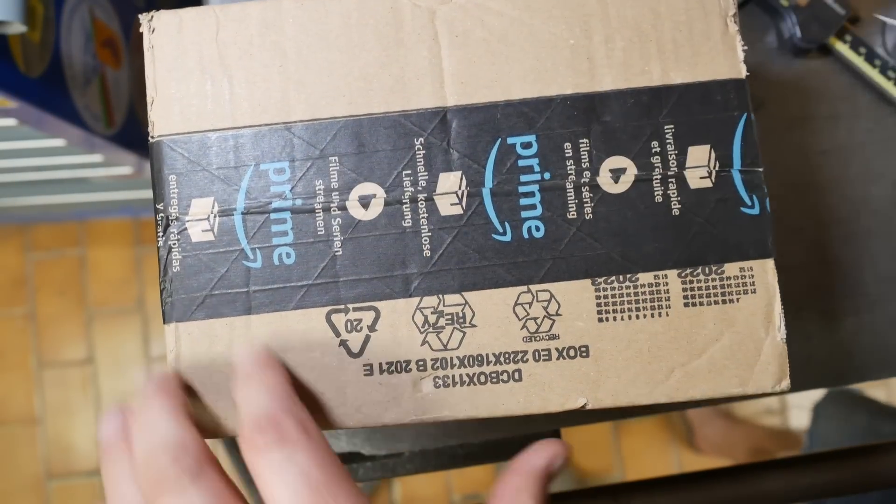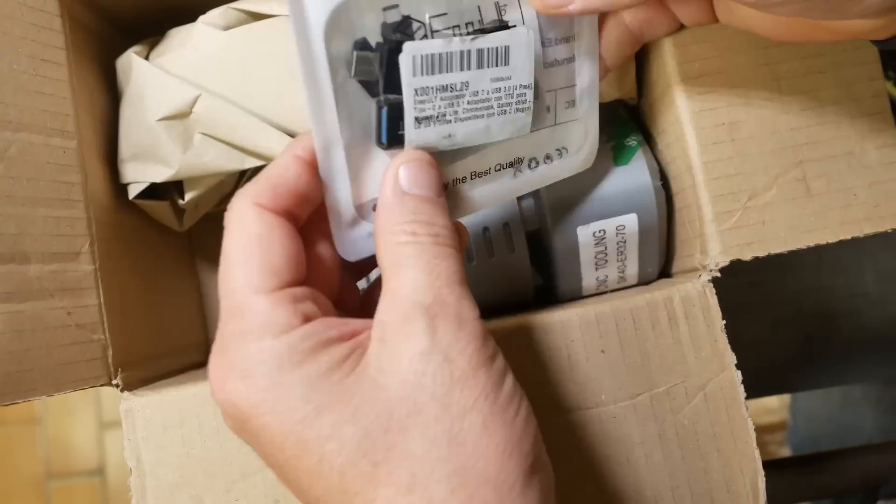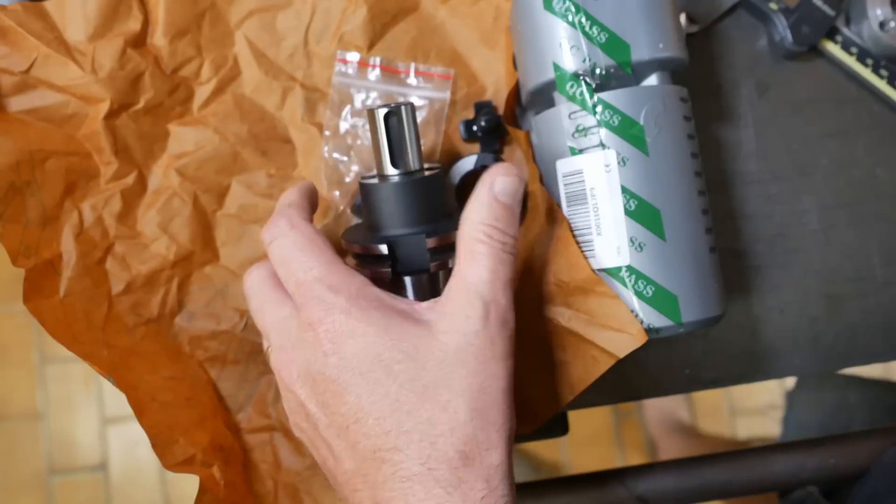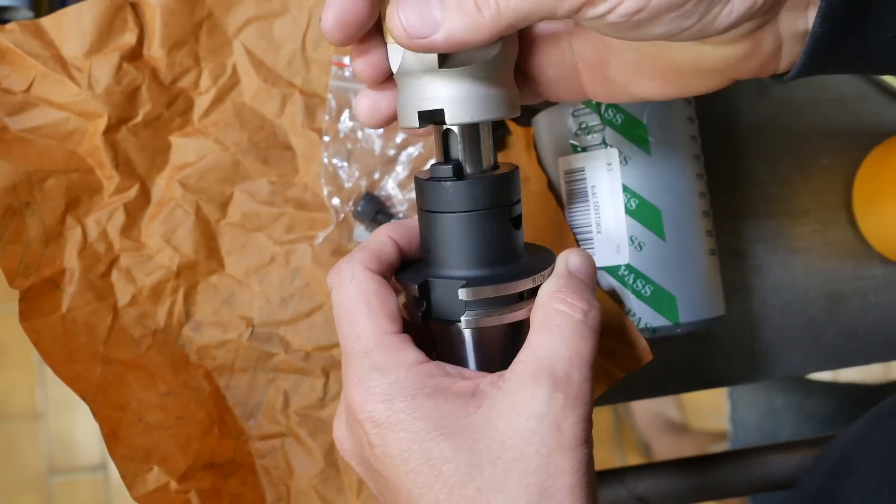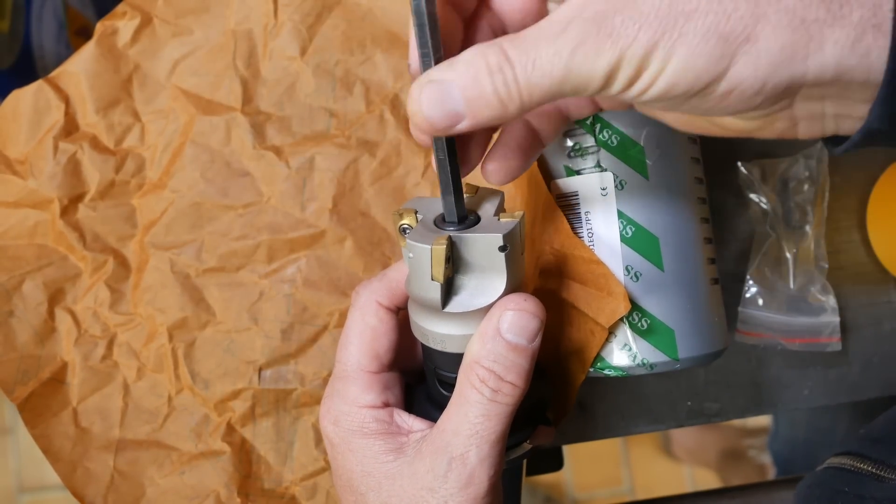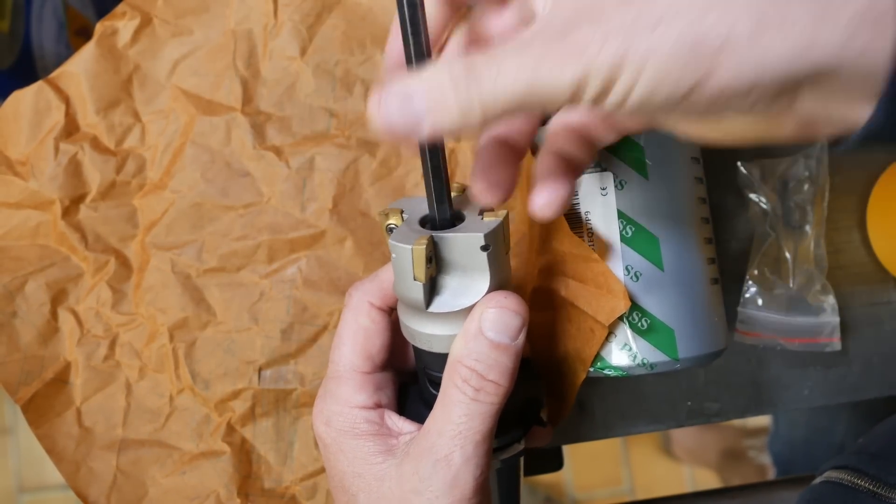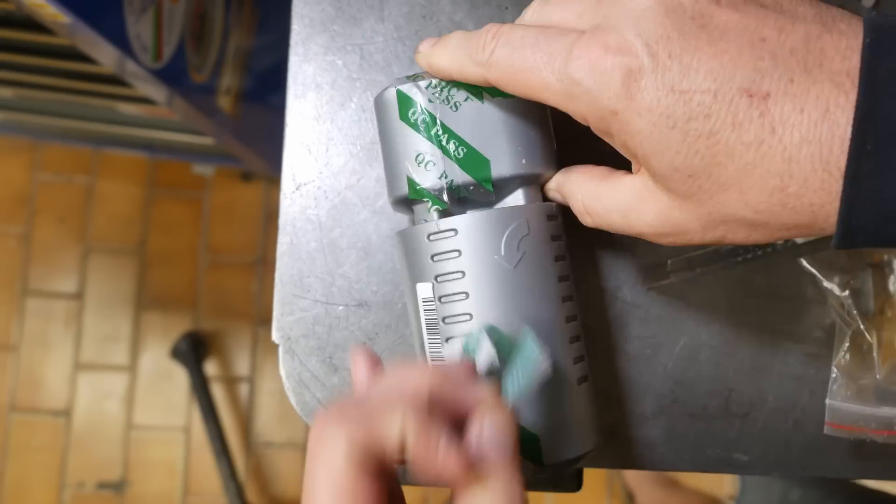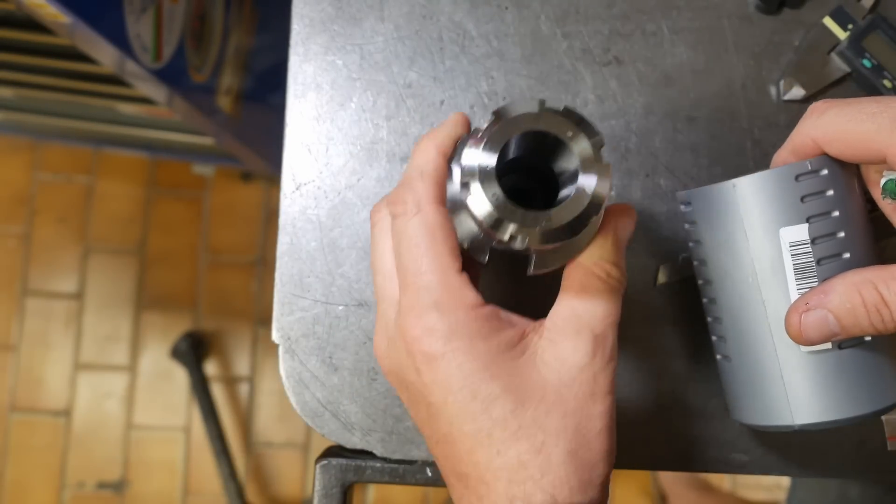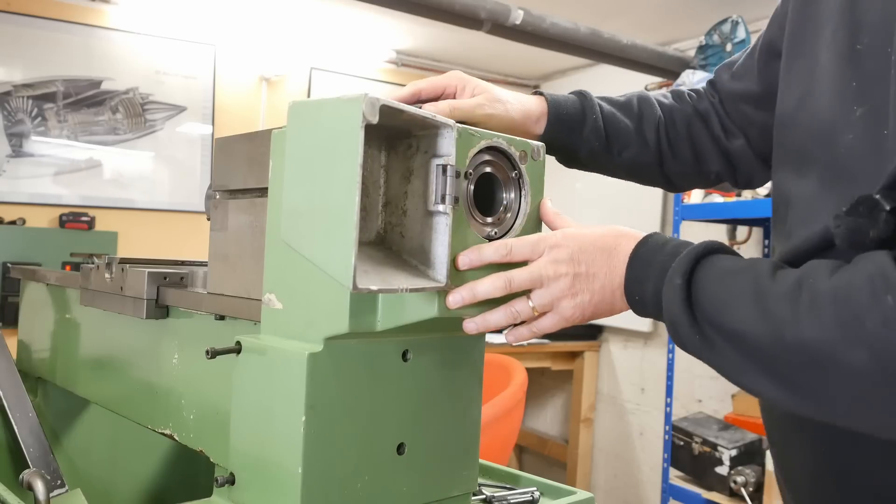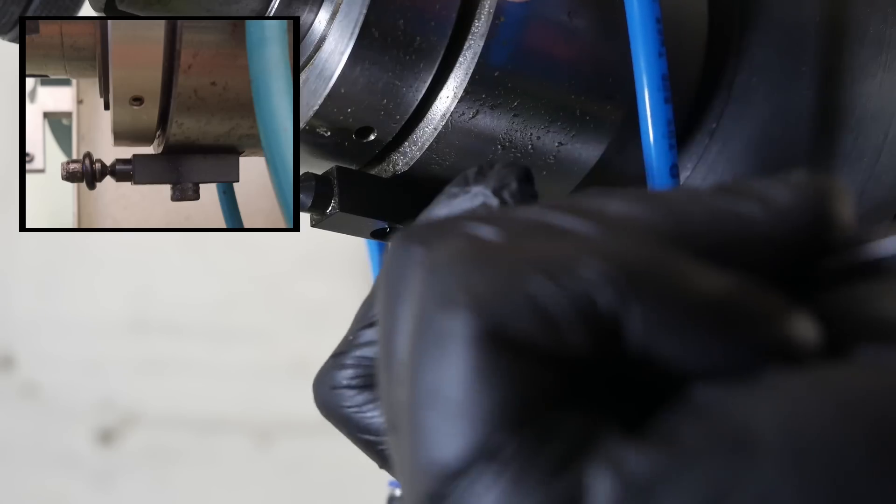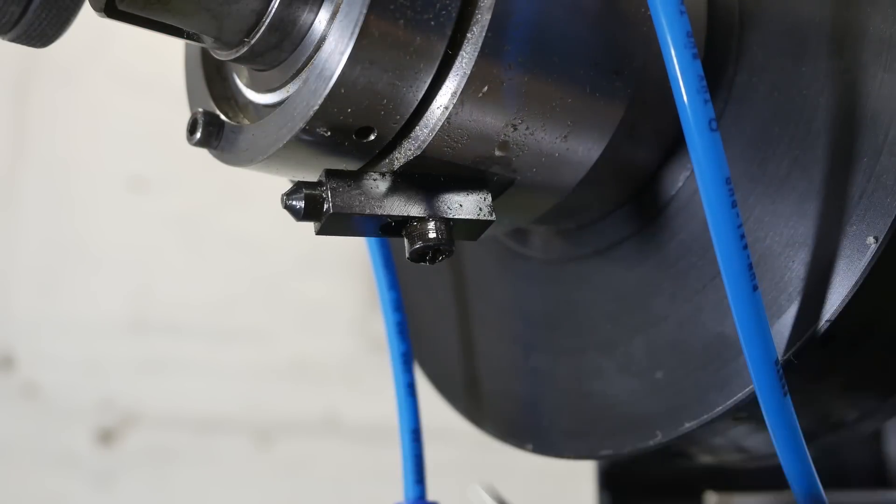Mail time! Oh good, it's the arbor for the shell mill I bought last week. And I also got another ER32 collet chuck because I was constantly having to change out tools in the ones I had. If you watched last week you know I found the anti-rotation feature on the collet closer broken, so let's go ahead and fix that shall we?